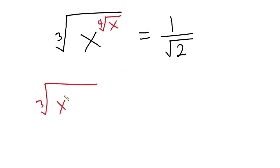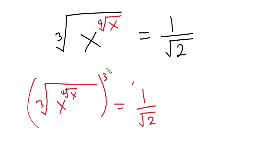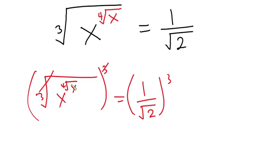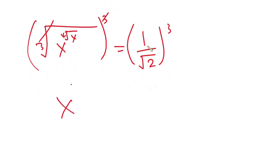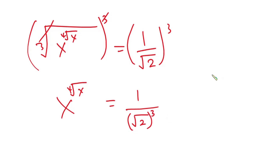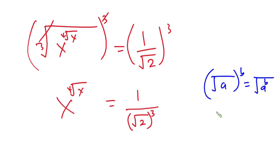We have the cube root of x to the power of the fourth root of x is equal to 1 over the square root of 2. Let's raise each side of the equation to the third power, so that the cube root will cancel. We then have x to the power of the fourth root of x is equal to 1 over the square root of 2, to the power 3. From indices, if you have (square root of a) to the power b, this is the same as the square root of (a to the power b). So the square root of 2 to the power 3 is the same as the square root of 8.